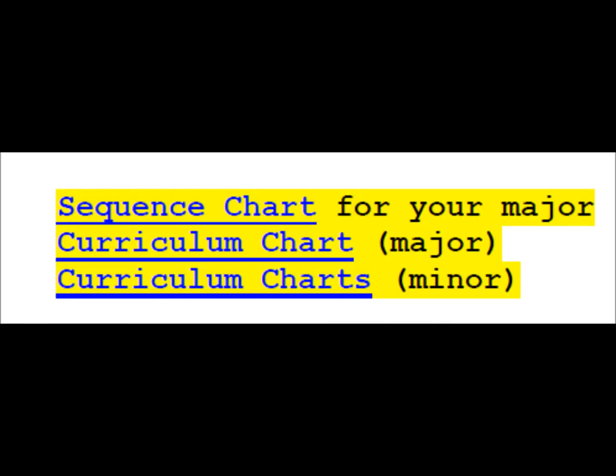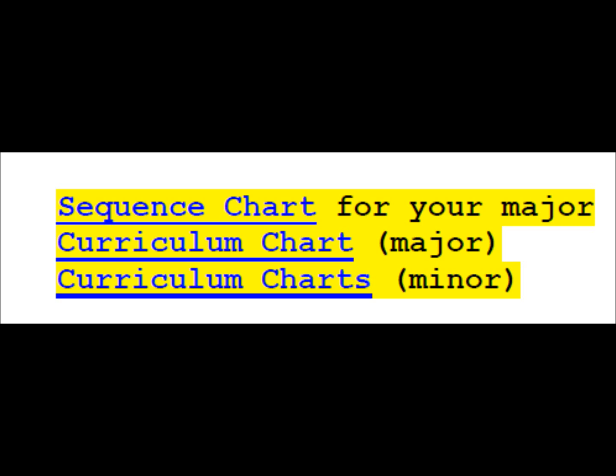Review the sequence chart and curriculum chart for your major. Also, consider exploring a minor, especially if you have a number of free electives available. Most minors range from 15 to 26 credit hours. Please keep in mind that ultimately, each student is responsible for the courses they choose to take.